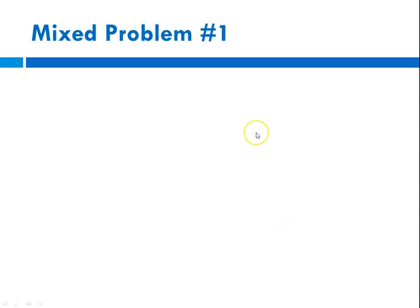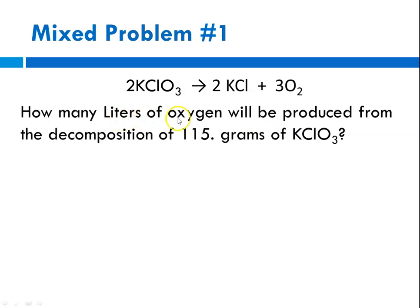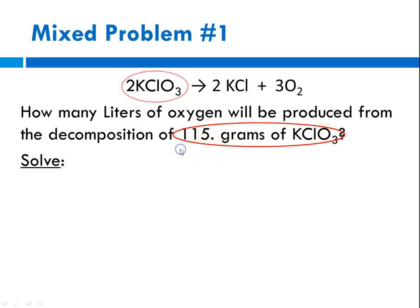Let's solve a mixed problem. Problem 1: for the reaction — decomposition of potassium chlorate to give potassium chloride and oxygen — how many liters of oxygen will be produced from the decomposition of 115 grams of potassium chlorate? This is mass and we want liters. Before we can solve this, we need to identify our variables. We were given grams of potassium chlorate — circle it in the equation so the mole ratio becomes obvious. We want liters of oxygen.